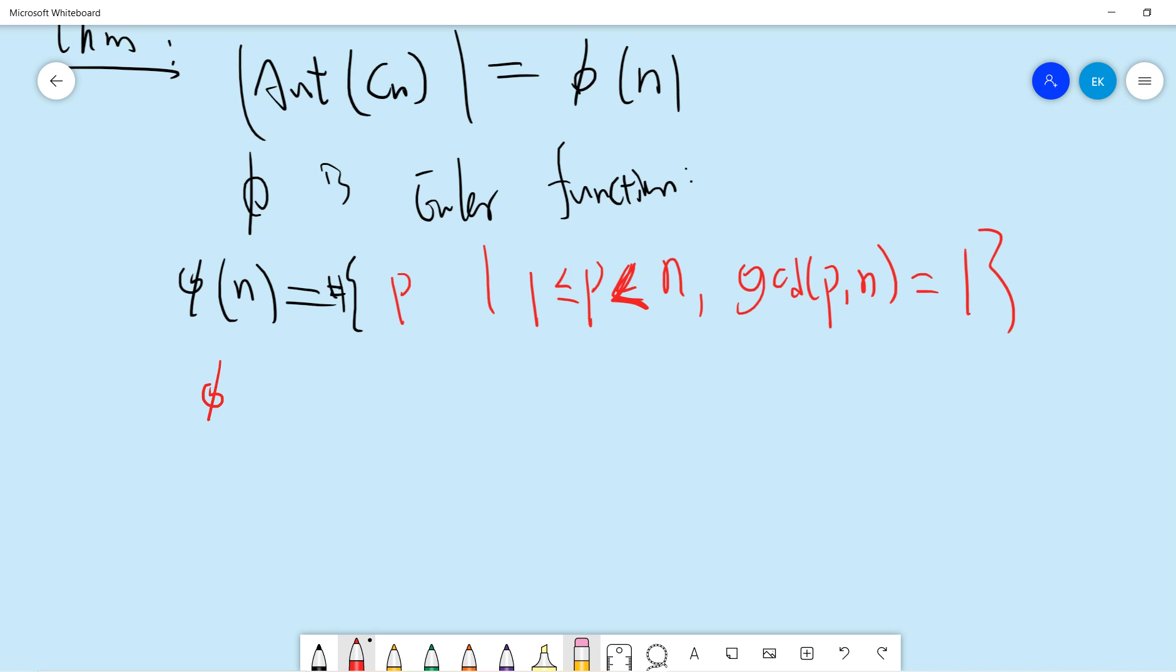For example, if n is prime, then phi(n) equals p minus one, because all numbers less than p are coprime to p.